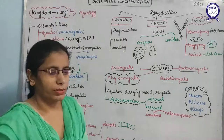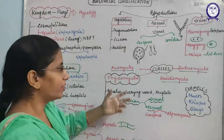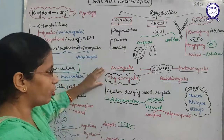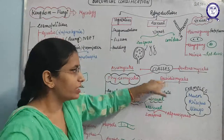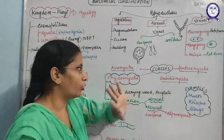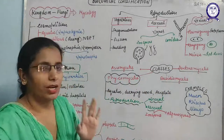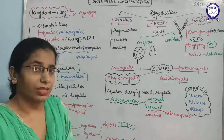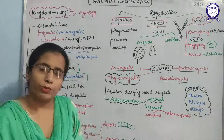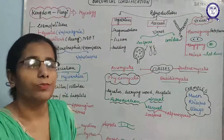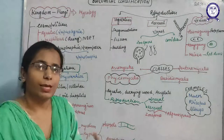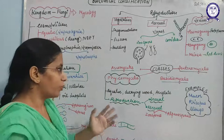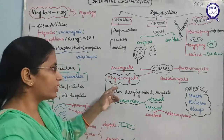The four classes of fungi we will study are: Phycomycetes, Ascomycetes, Basidiomycetes, and Deuteromycetes. These classes are divided on the basis of their habitat, type of reproduction, type of spores formed, and how the spores are formed.